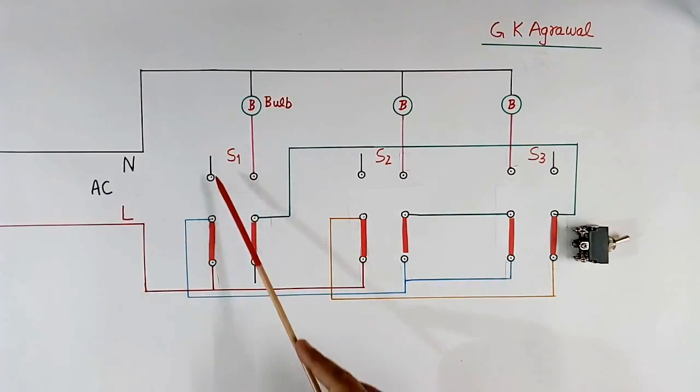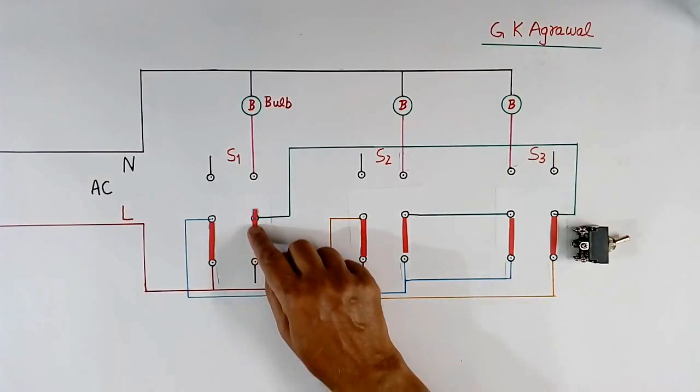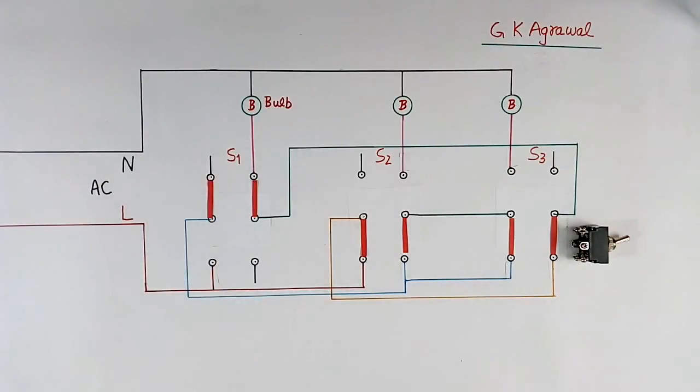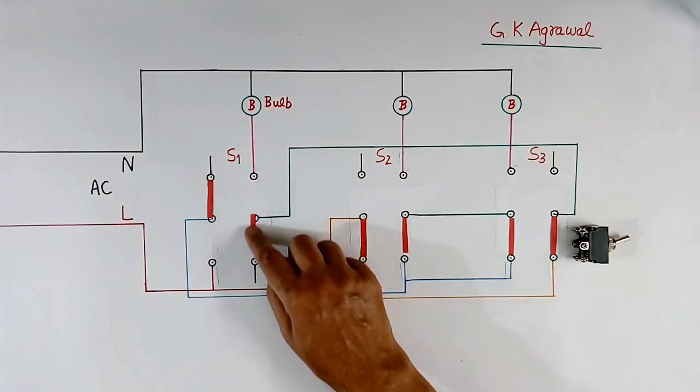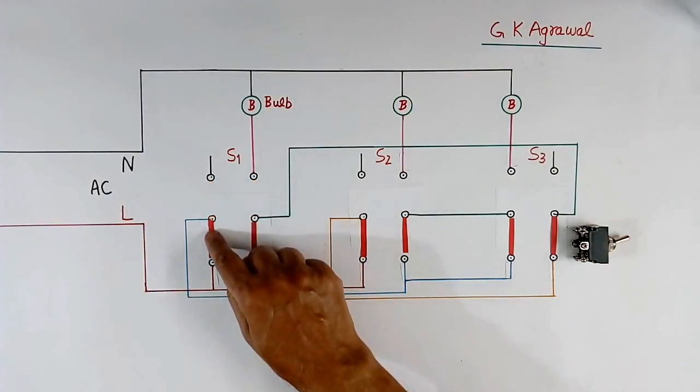This switch has 1, 2, 3, 4, 5, 6 terminals. Now this switch consists of 2 switches, one this, one this. As present both are OFF. When I want to make it ON, I will shift like this. So both will look like ON. This is for explanation purpose.